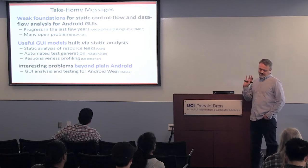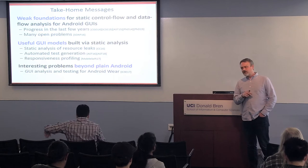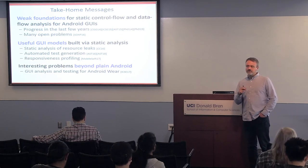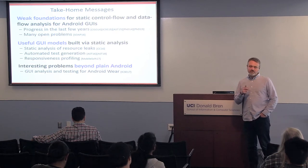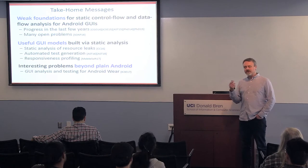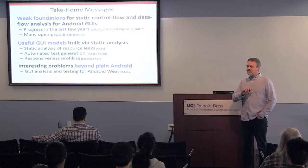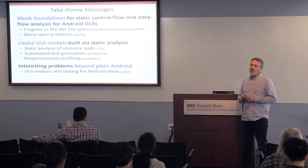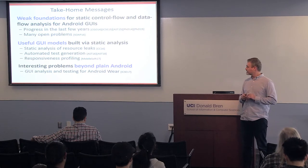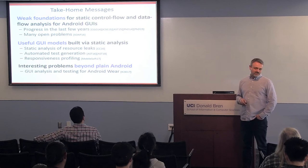The second message is that even though we haven't gone as far as I personally would like to see, there is already enough knowledge so that we can create fairly useful models for Android GUI structure and behavior, and use them for a number of different things. One particular example I'll give is static analysis for resource leaks. Other applications include automatic test generation and various types of profiling. The final message — which may be even more important — is that as a community we should start thinking beyond regular Android devices and applications and look at the broader picture, such as analysis for Android Wear applications for smart watches.